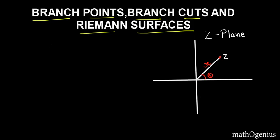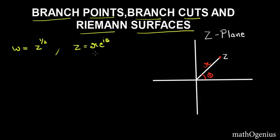To solve this multivalued problem in complex analysis we have branch points, branch cuts, and Riemann surfaces. Let's first take the function w = z^(1/2), which is the root of z. This is a simple multivalued function in complex analysis. Remember, z = x + iy, or in polar form z = Re^(iθ), which is R·cosθ + i·sinθ.